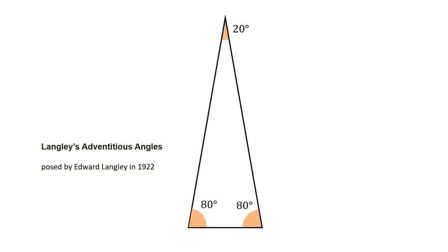Today we talk about a problem called Langley's Adventitious Angles. It's from 1922 by Edward Langley, and it's sometimes called the Hardest Easy Geometry Problem. It's about a triangle we call it 80-80-20 because one angle is 20 degrees and the other two equal angles are 80 degrees.